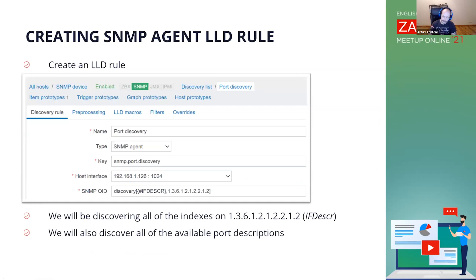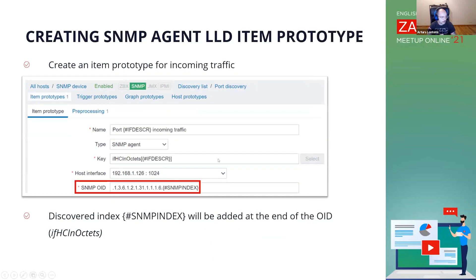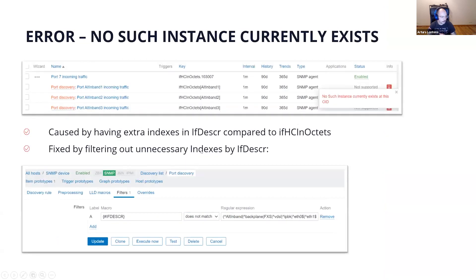Creating an item is simple — just open the documentation and do it. But how about creating a low-level discovery rule? This is where things get a bit tricky and we delve a bit deeper. I created a discovery rule to discover all of the indexes on a description OID and to discover all of the descriptions and indexes. I created a prototype for incoming octets, which will be populated with all of the discovered indexes from my discovery rule. But I have some error messages: 'No such instance currently exists at this OID.' This is something many people who have worked with SNMP discovery have encountered.